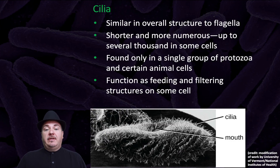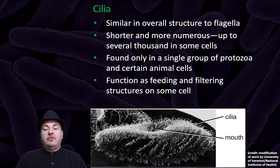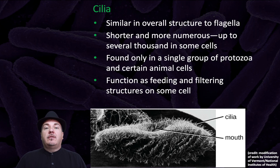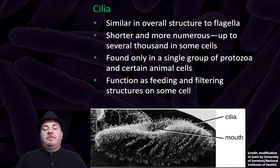We can have cilia, which are similar in overall structure to flagella, but they're shorter and more numerous — up to several thousand in some cells. They're found only in a single group of protozoa and in certain animal cells. They function as feeding and filtering structures on some cells.